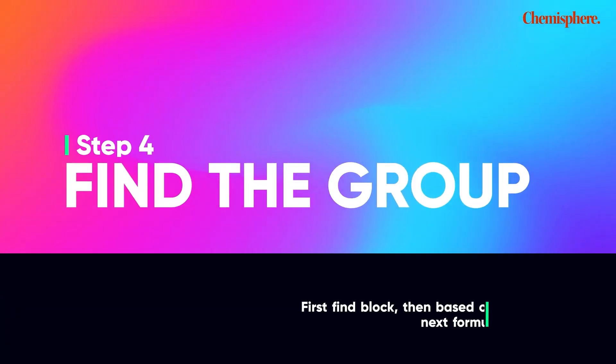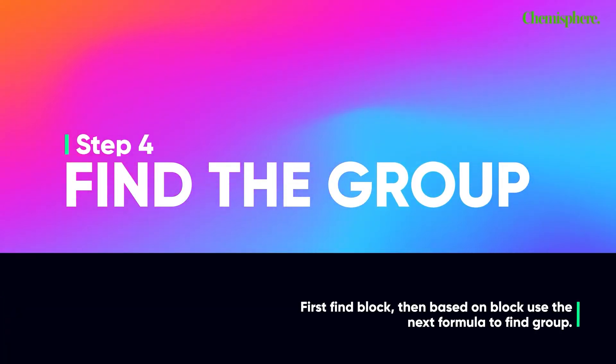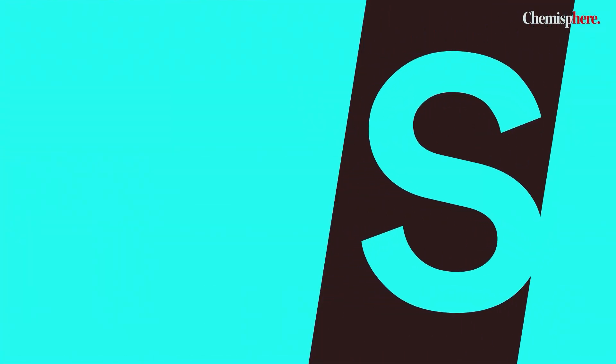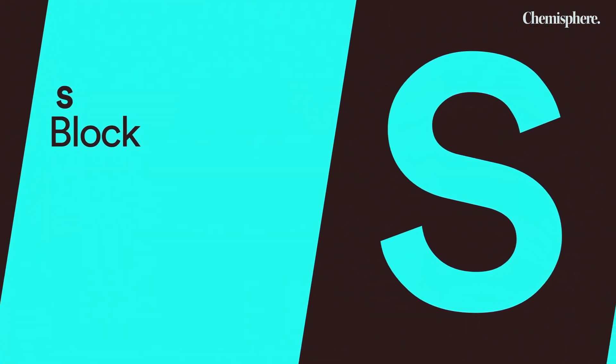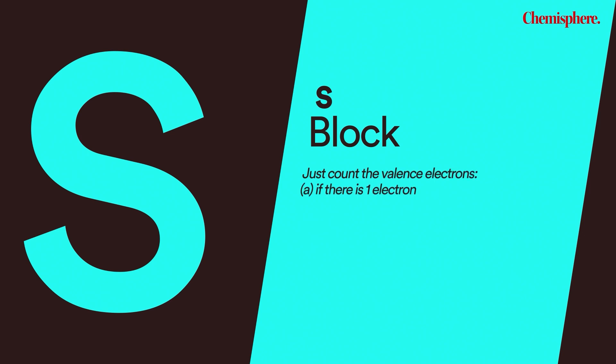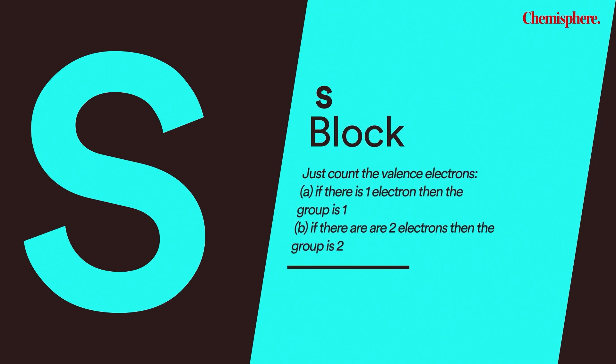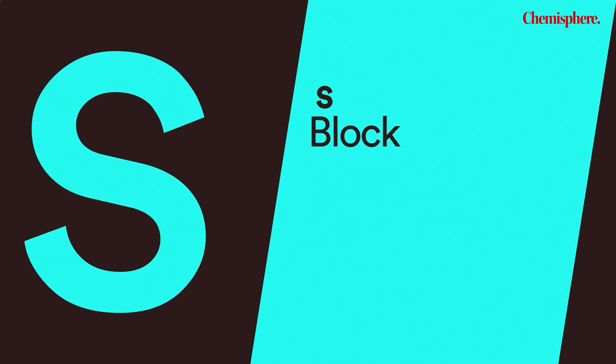Lastly, we have to find the group number. In order to find the group, we must first find which block the element lies in — without doing that, there is no way to find the group number. If the element is found in the s block, then check the valence electrons. If the valence electrons are 1, the element lies in group 1. Similarly, if the element has 2 valence electrons, it means the element lies in group 2. So there are only 2 groups possible for s block.